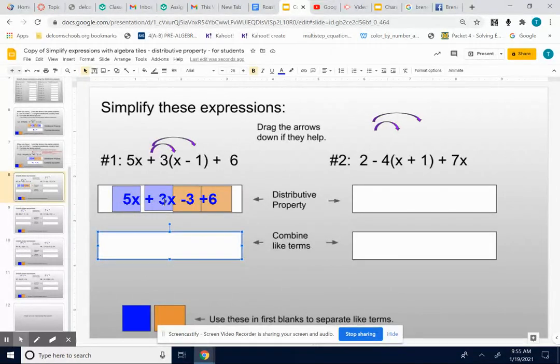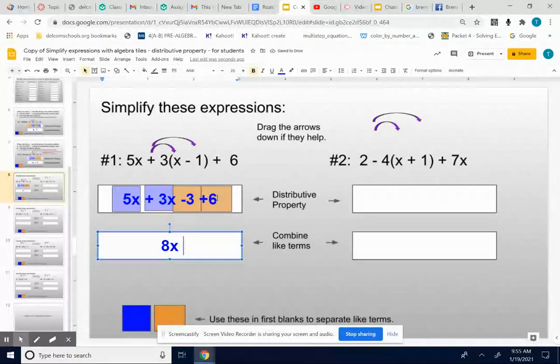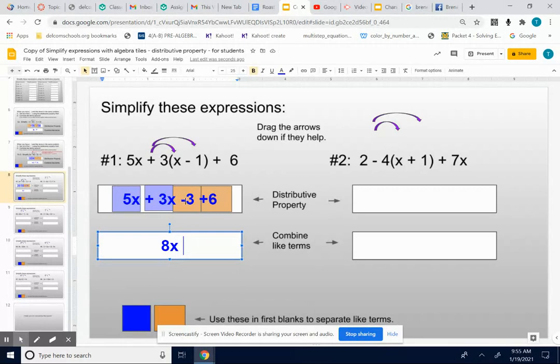5x added to 3x is 8x. And then I have a negative 3 plus a positive 6. When you add a negative and a positive, you subtract and keep the sign of the larger number. So 6 minus 3 is 3. The bigger number is positive, so it's a positive 3. So we get 8x plus 3.